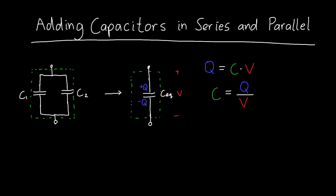These capacitors, because they're connected at both ends, form what we call a parallel connection. And because they're connected at both ends, they have the same voltage across them. Connecting things at both ends with a wire ensures those two things have the same voltage. So this point has the same voltage as this point, and this point has the same voltage as this point. The voltage across capacitor one equals the voltage across capacitor two, which we'll just call V.